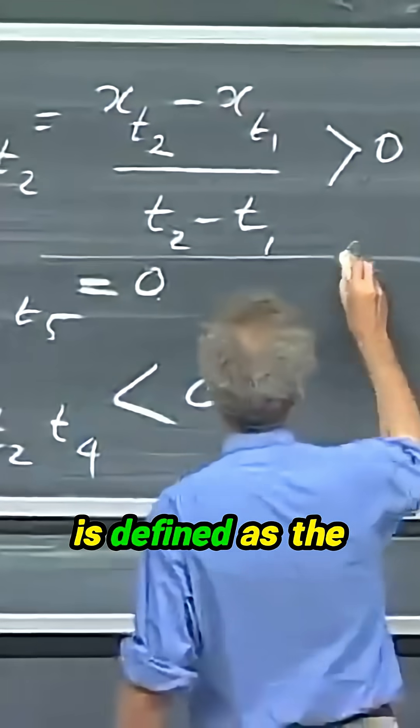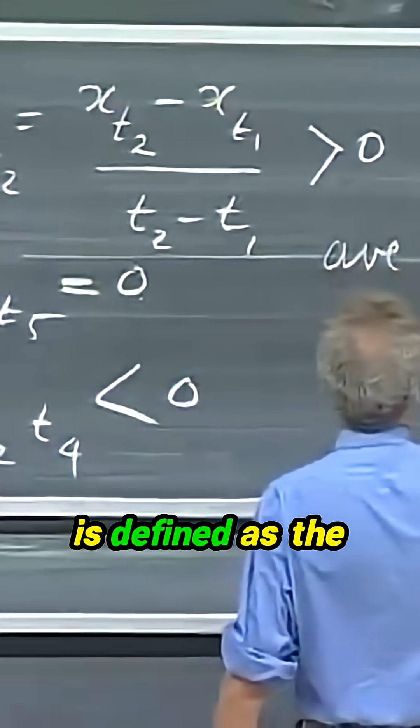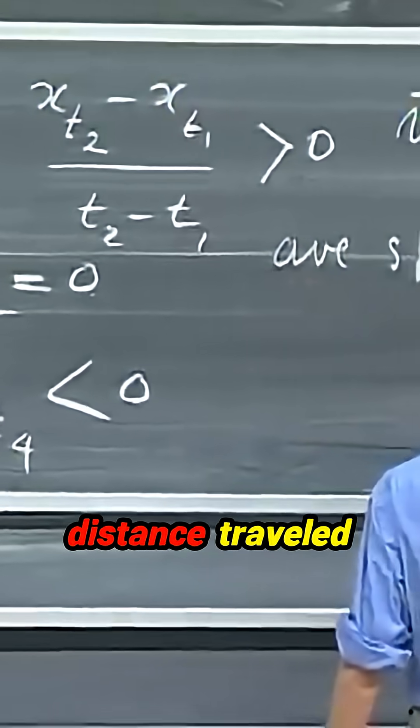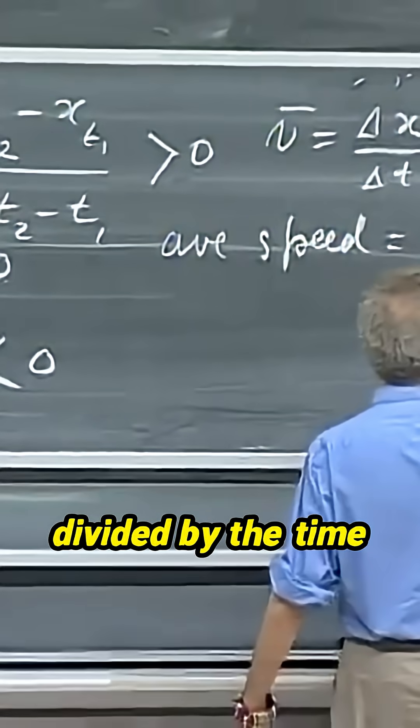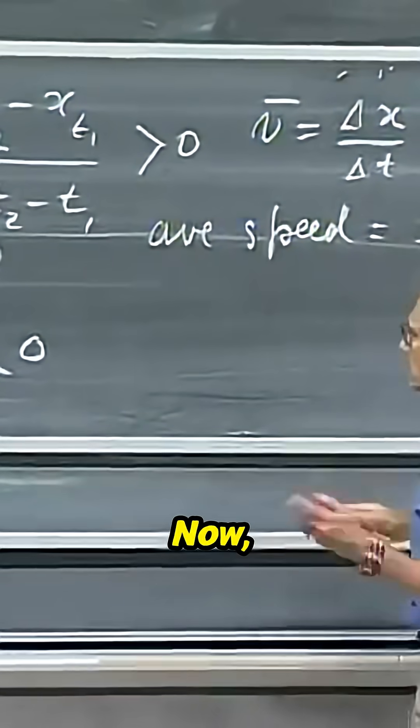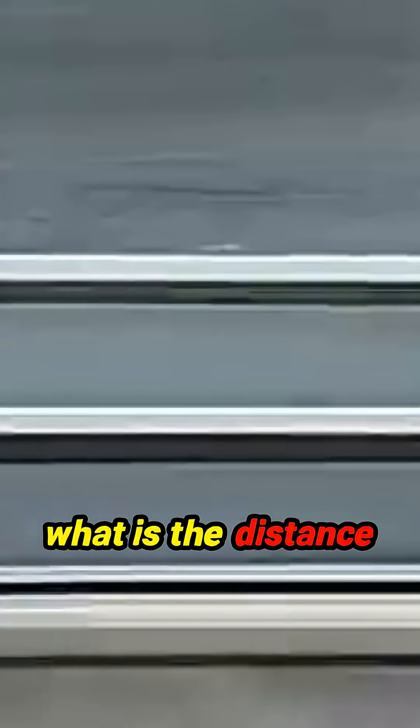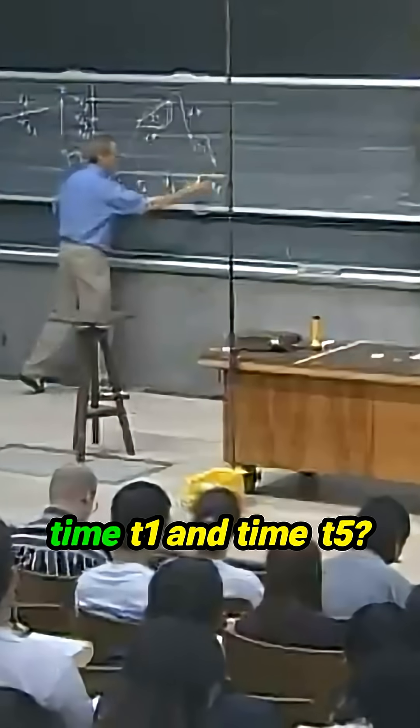The average speed is defined as the distance traveled divided by the time that it takes to travel that distance. Now, what is the distance that the object traveled between time t1 and time t5?